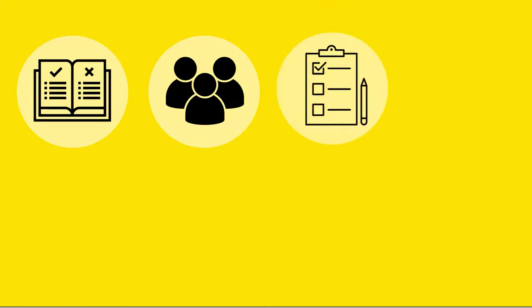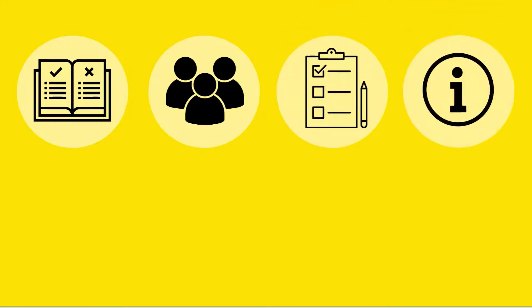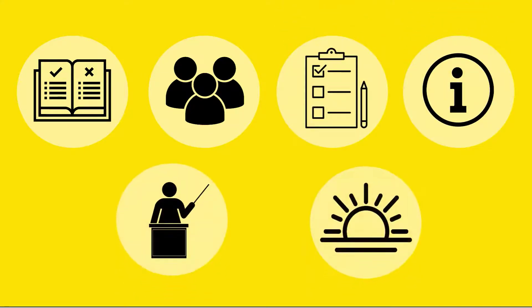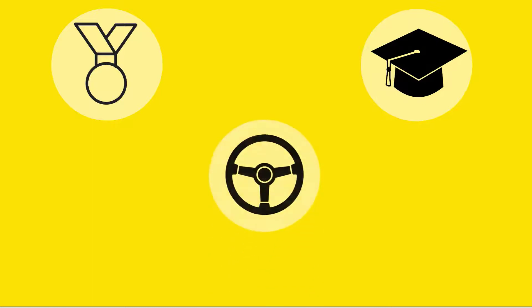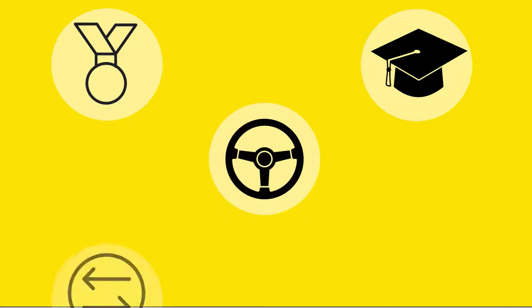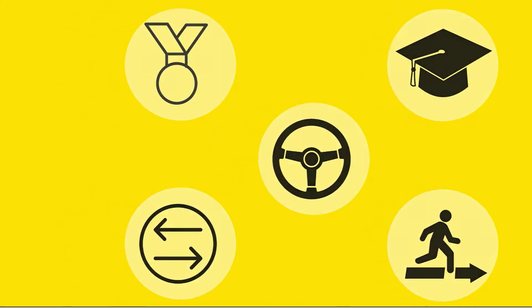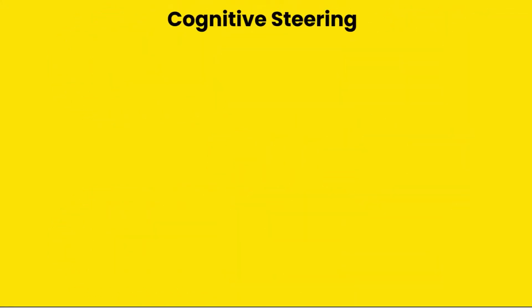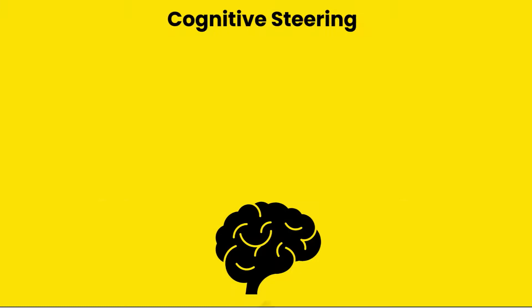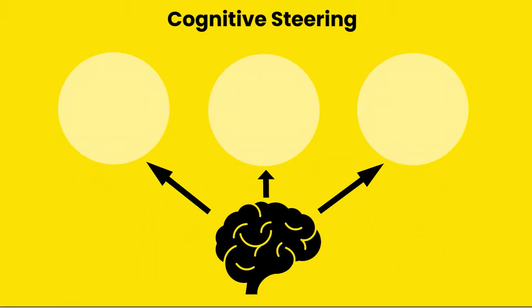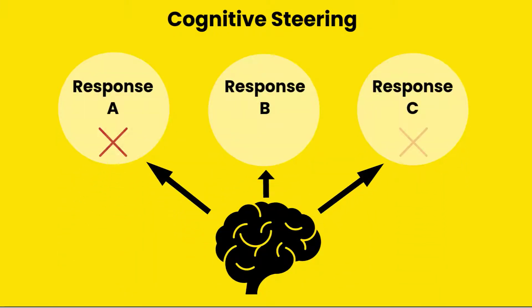They have to navigate different rules, different people, different tasks and different information, every lesson, every day. In order to be successful, your students need to be able to steer, changing how they respond and act in different learning situations. Cognitive steering is the function of the brain that allows them to simulate and select possible responses to new and unfamiliar situations.